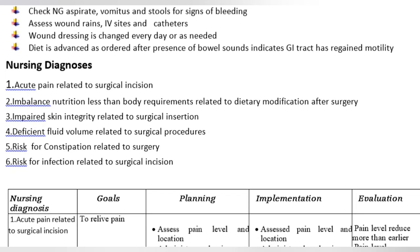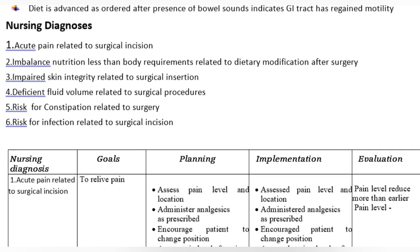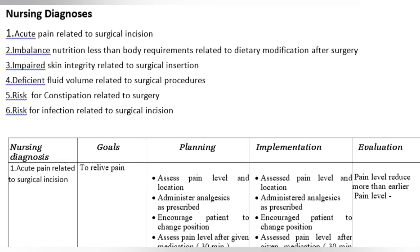Diet is advanced as ordered after presence of bowel sounds indicates the GI tract has regained motility. Nursing diagnoses: 1. Acute pain related to surgical incision. 2. Imbalanced nutrition less than body requirements related to dietary modification after surgery. 3. Impaired skin integrity related to surgical incision. 4. Deficient fluid volume related to surgical procedures. 5. Risk for constipation related to surgery. 6. Risk for infection related to surgical incision.